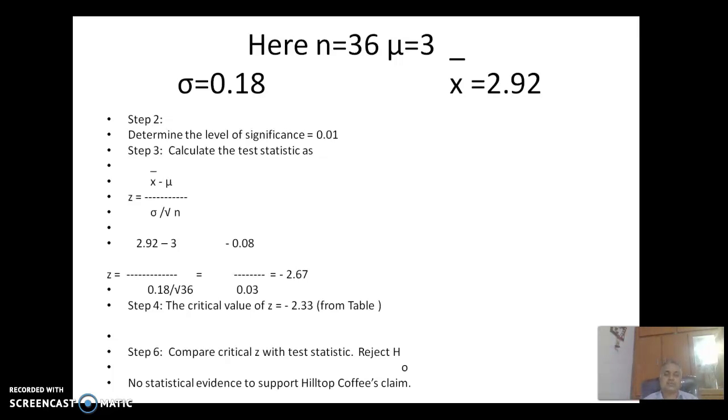Then step 2. The level of significance is 0.01. Step 3. The test statistic z equals x bar minus mu divided by sigma over root n. So we take x bar is 2.92, sigma is 0.18, mu equals 3.